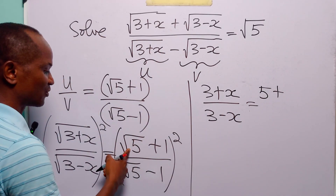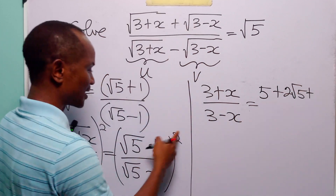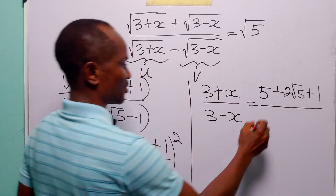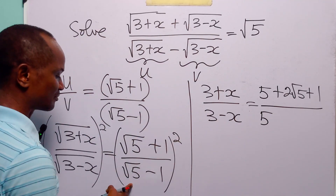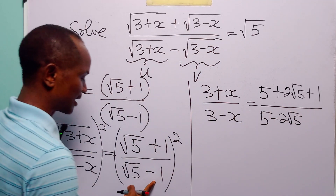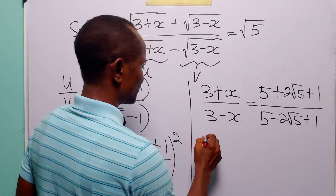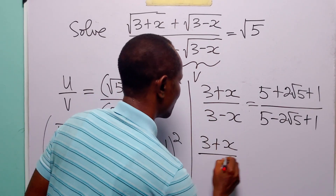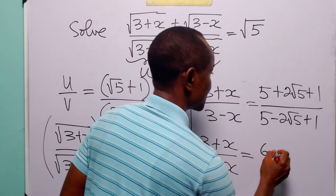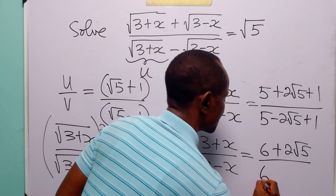Expanding the numerator: root 5 squared is 5, plus 2 times root 5 times 1 which is 2 root 5, plus 1 squared which is 1. Expanding the denominator: root 5 squared is 5, minus 2 times root 5 times 1 which is minus 2 root 5, and minus 1 squared is 1. So we have (3 plus x) over (3 minus x) equals (6 plus 2 root 5) over (6 minus 2 root 5).